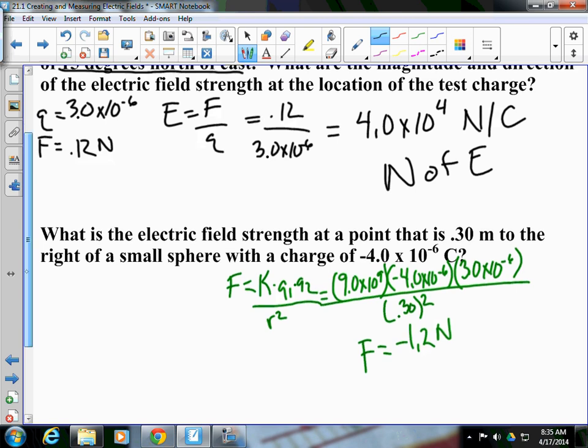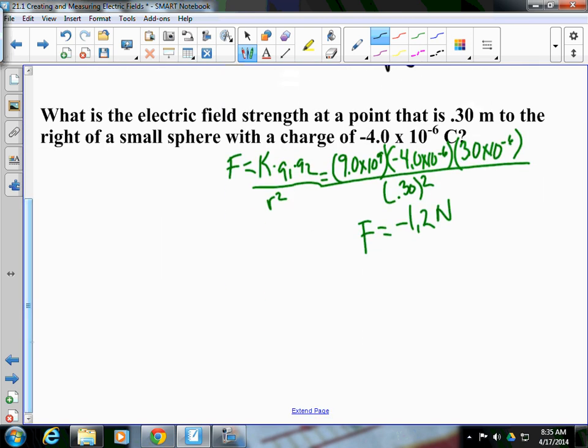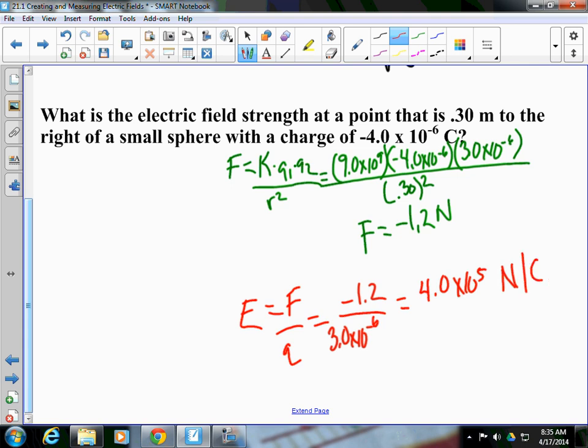We can take this answer and just plug it in because we know electric field equals force divided by q. Well, our force is negative 1.2. Our test charge is q, which from the first part of the question is 3.0 times 10 to the negative 6. You divide this out and you end up getting the answer of 4.0 times 10 to the 5th. And remember, our units for our electric field strength are newtons per coulomb.